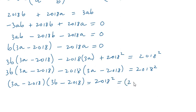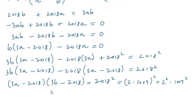Now, 2018² can be written as 2² × 1009². We shall determine the possible values of (3A − 2018) and (3B − 2018) given that their product is 2018² = 2² × 1009². One key observation is that the factors (3A − 2018) and (3B − 2018) are congruent to 1 mod 3, meaning each produces a remainder of 1 when divided by 3. This further implies that the values of these expressions must also be congruent to 1 mod 3.